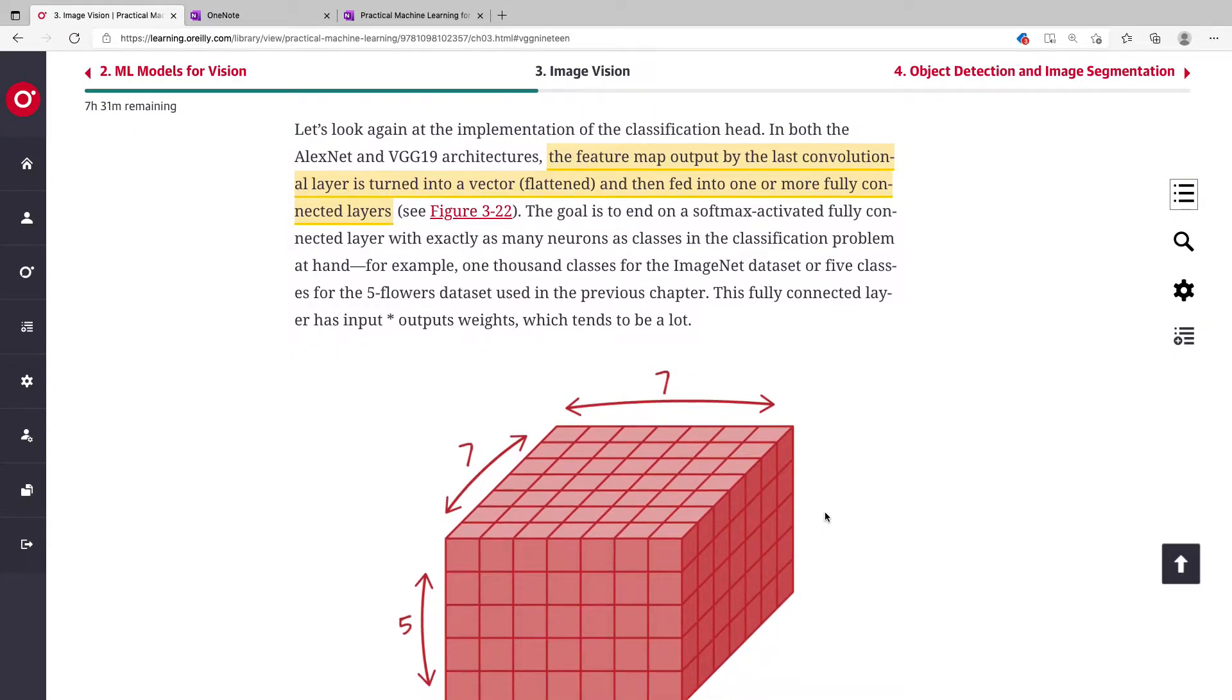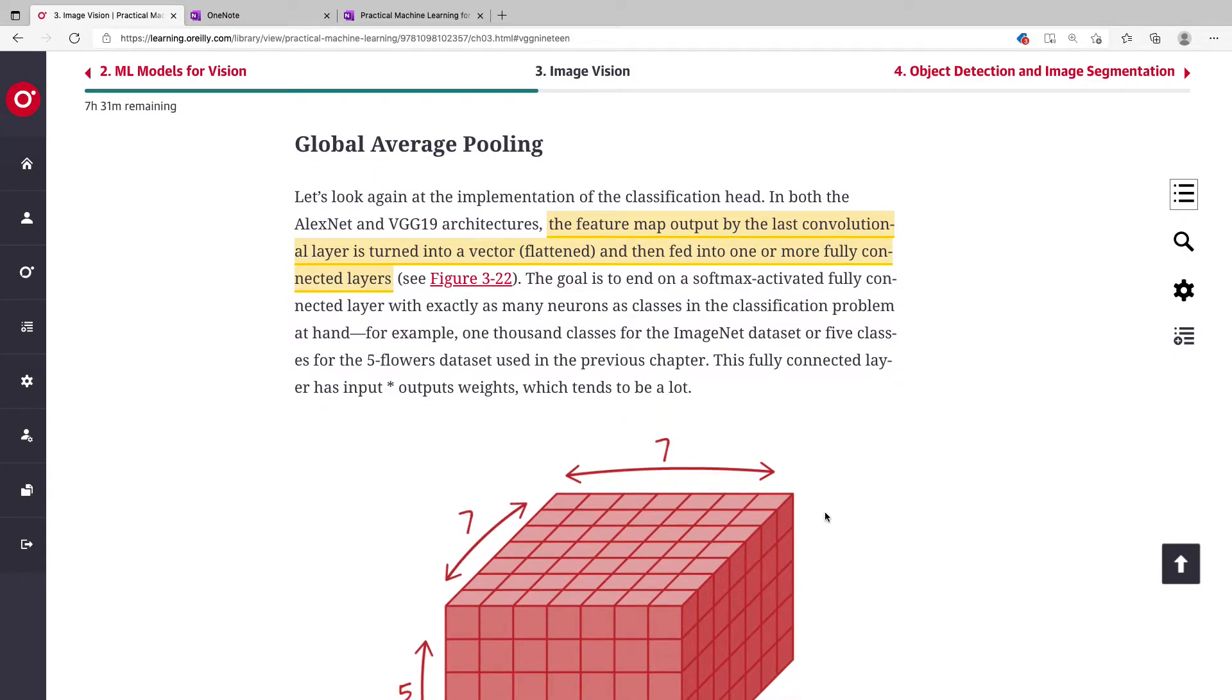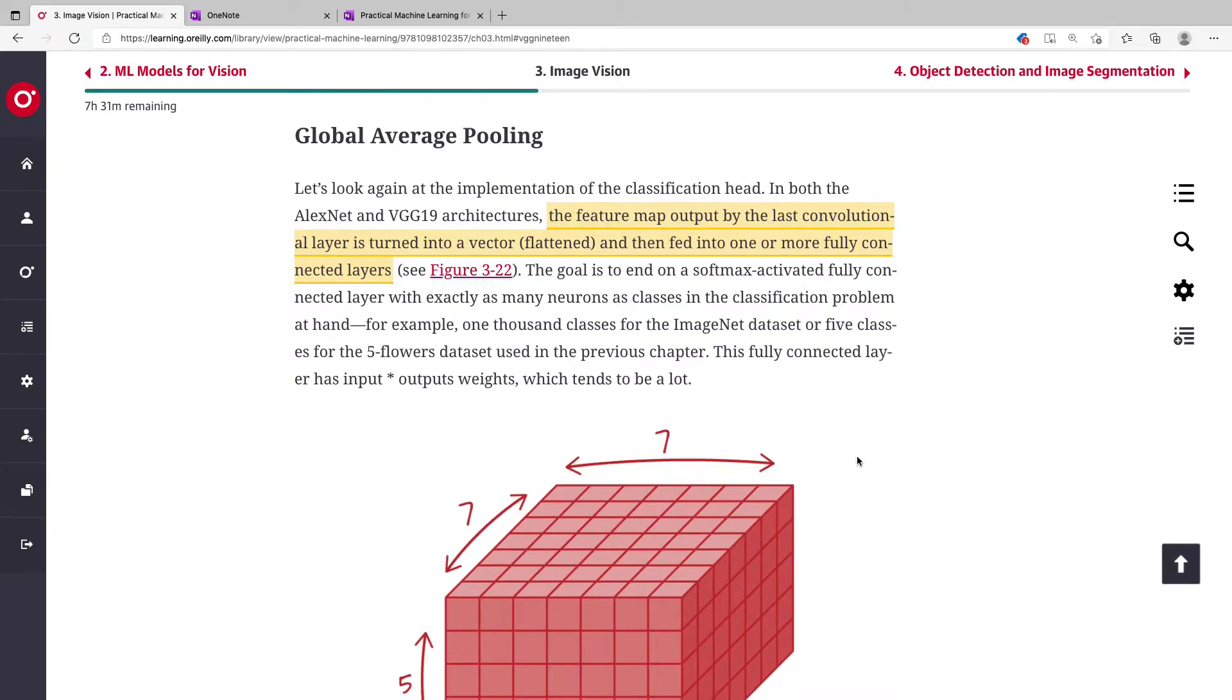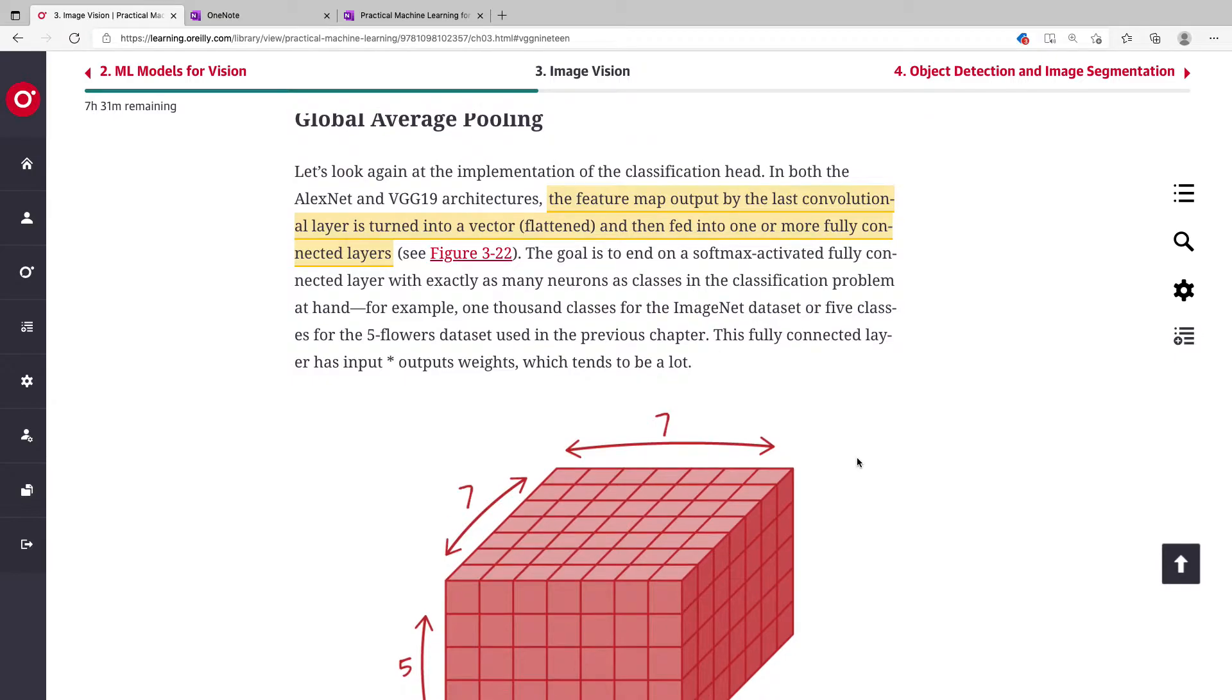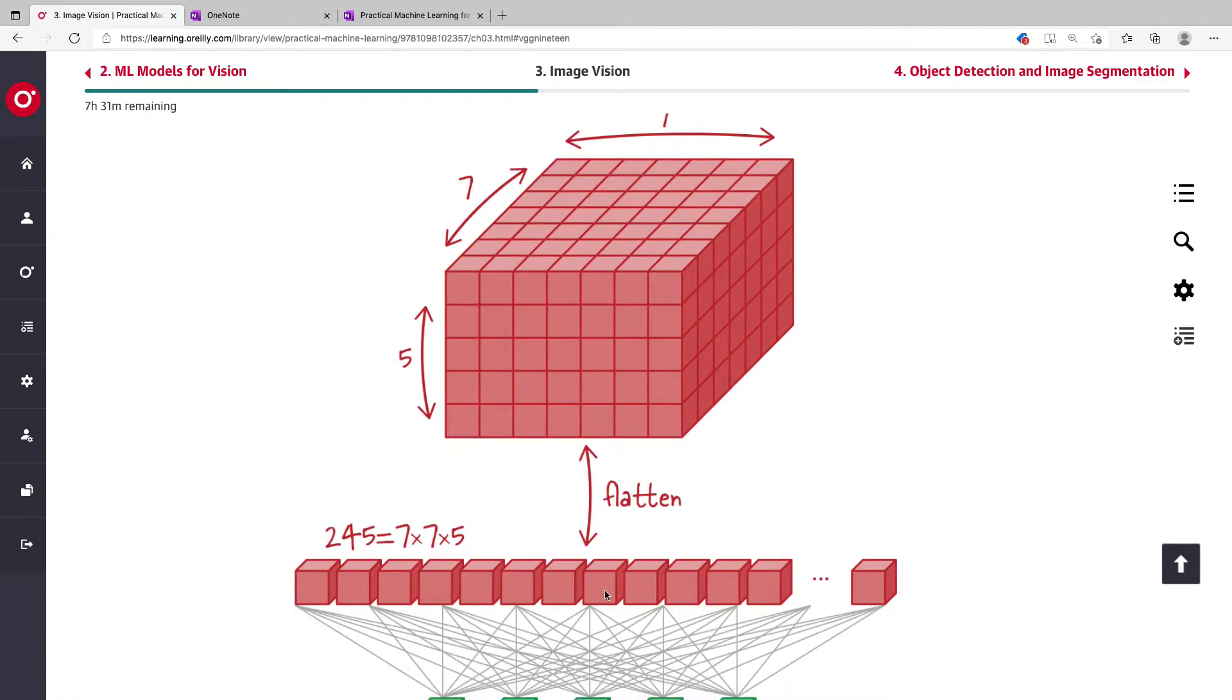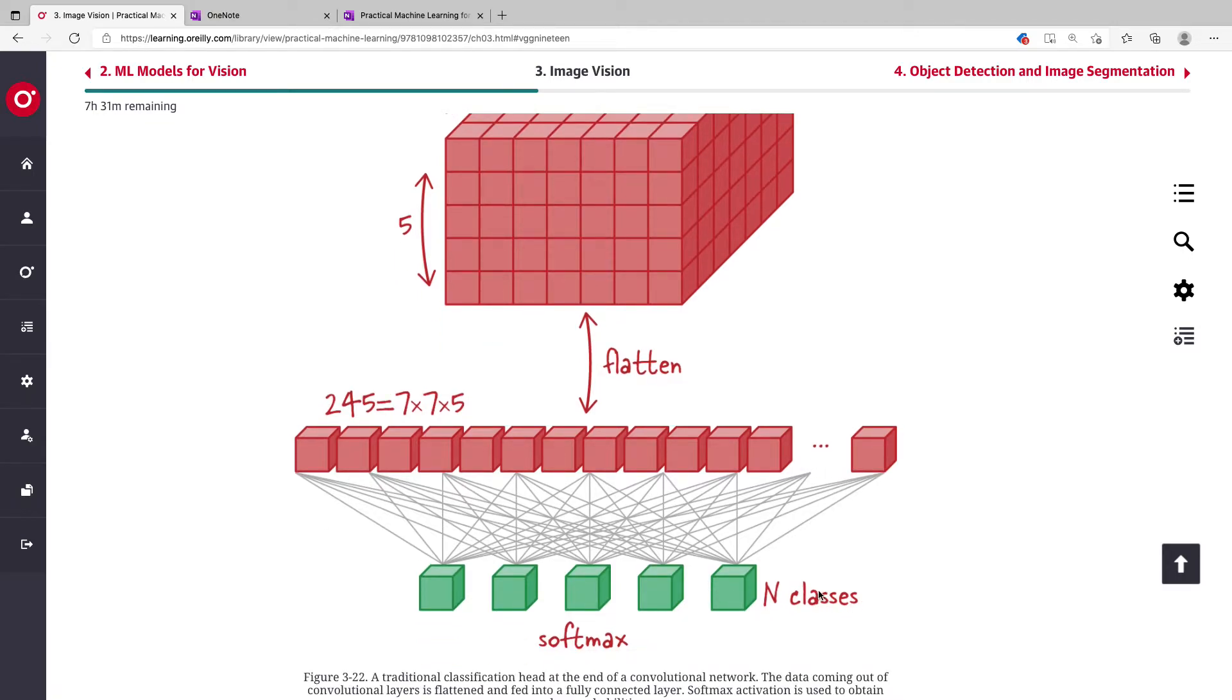When you have your network with a series of convolutional layers, your intention is to ensure that your network eventually outputs a set of class probabilities. That's why you flatten your feature maps into a vector and feed that flattened feature map into a set of normal classes.